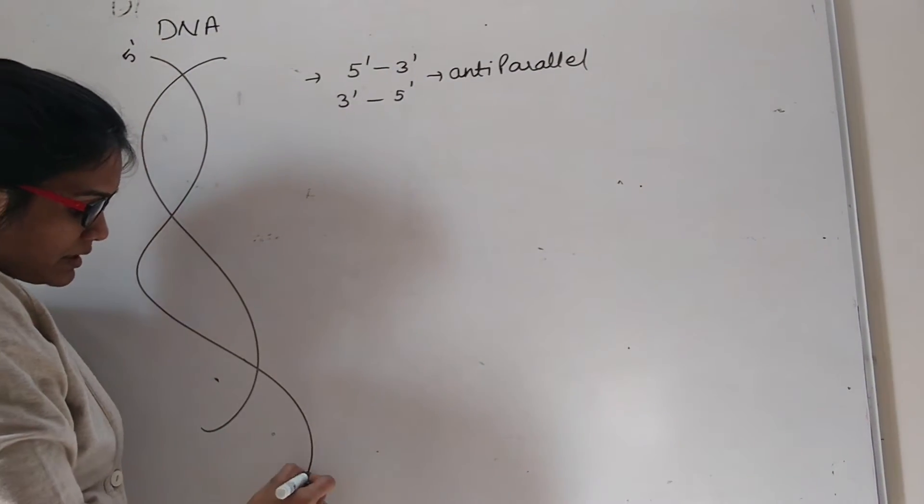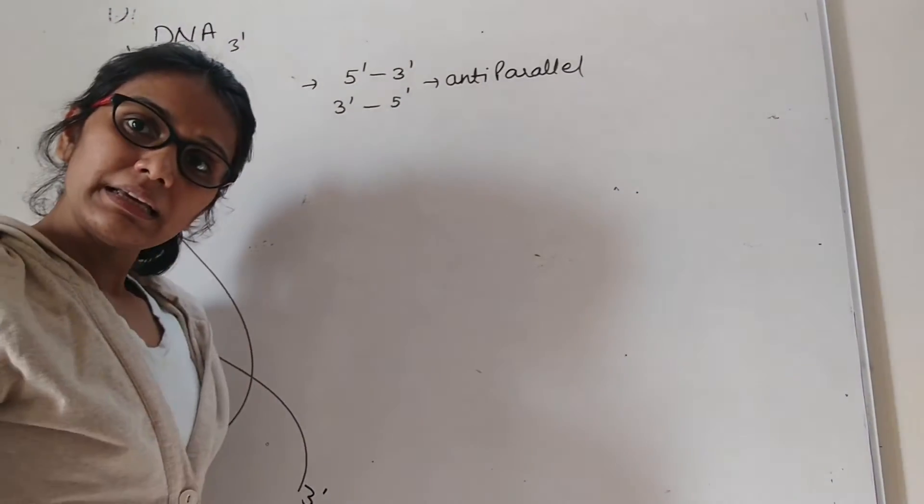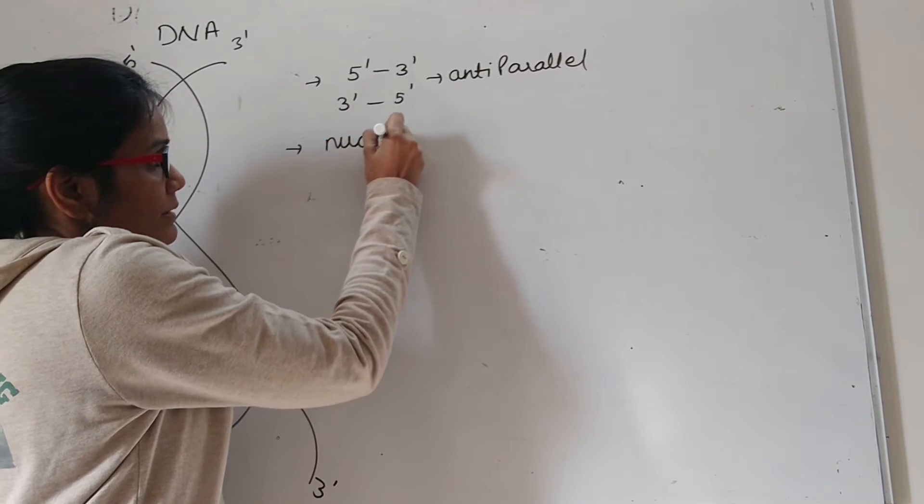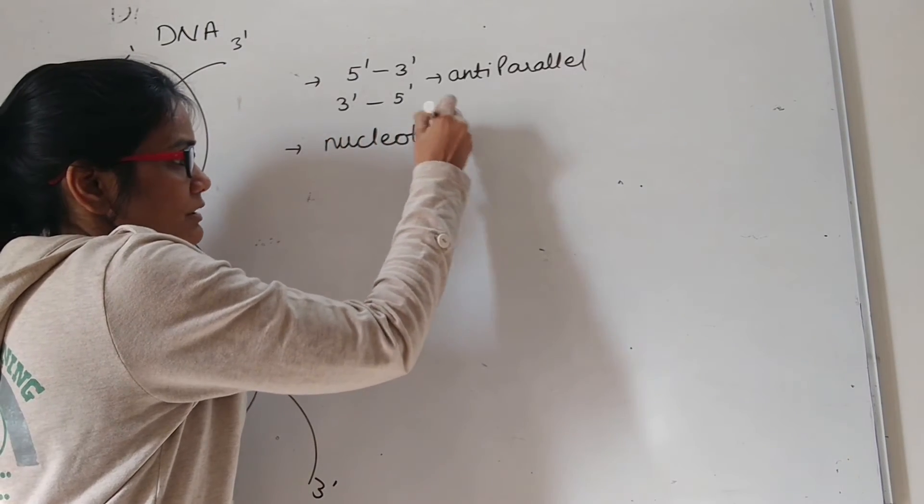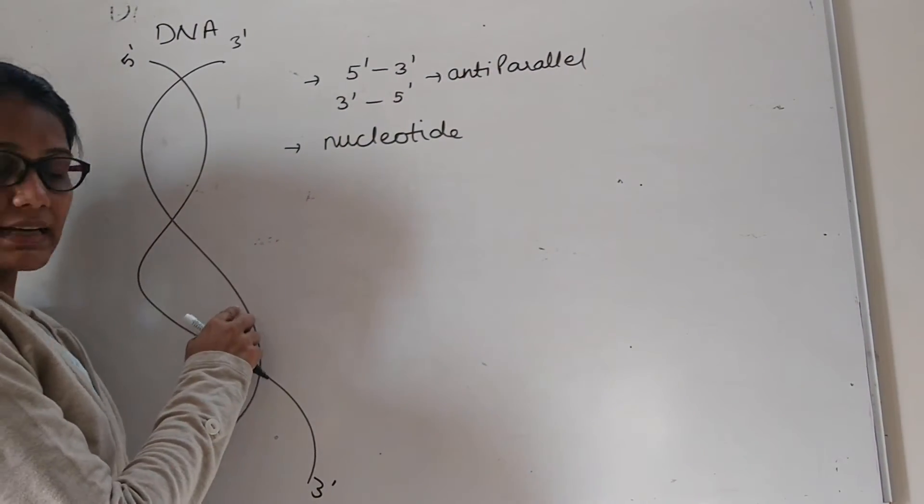One strand runs in 5' to 3' and the other strand runs in 3' to 5' direction. Each double helical structure DNA is made up of a polymer of nucleotide. It is called as a polynucleotide chain. The two strands are there, it is a double helical structure.